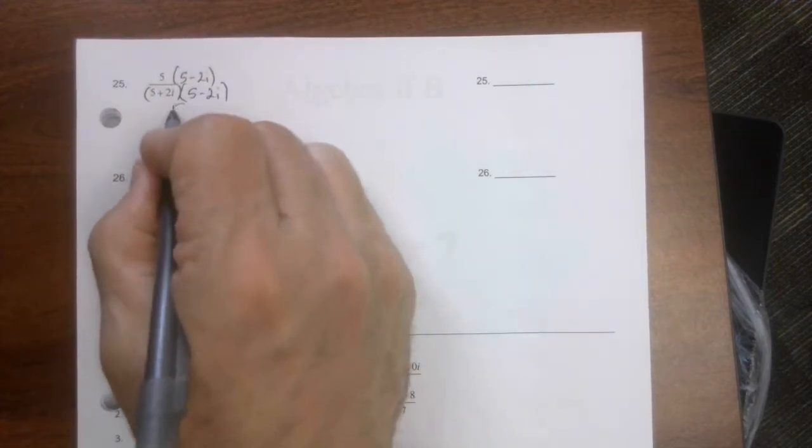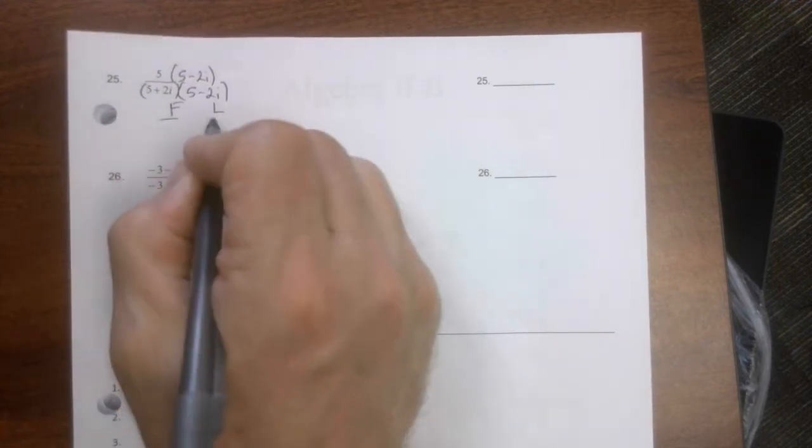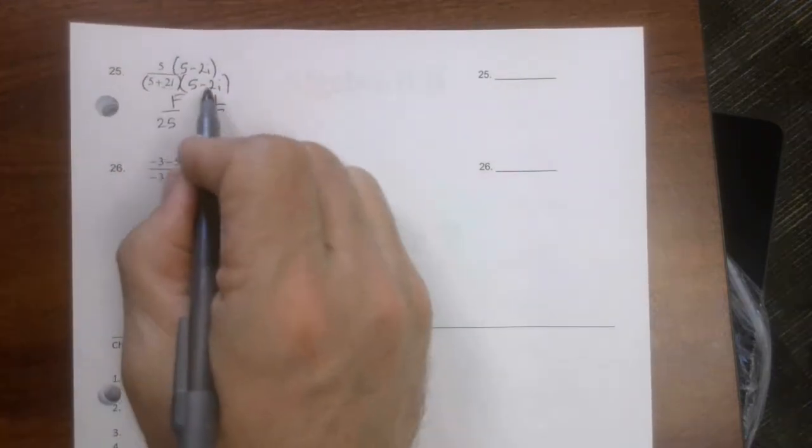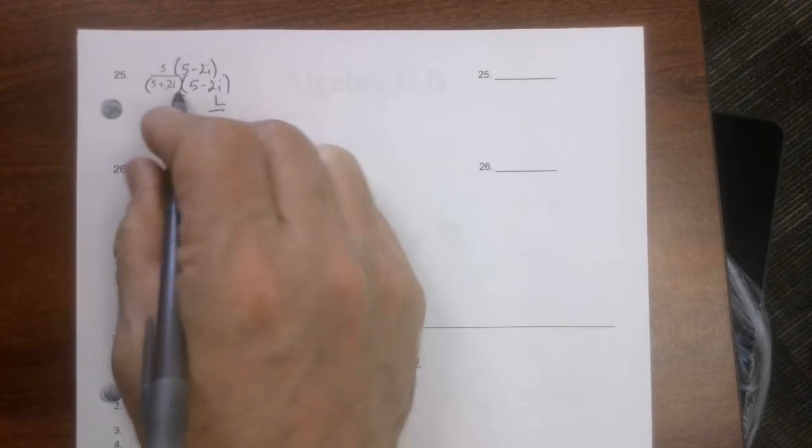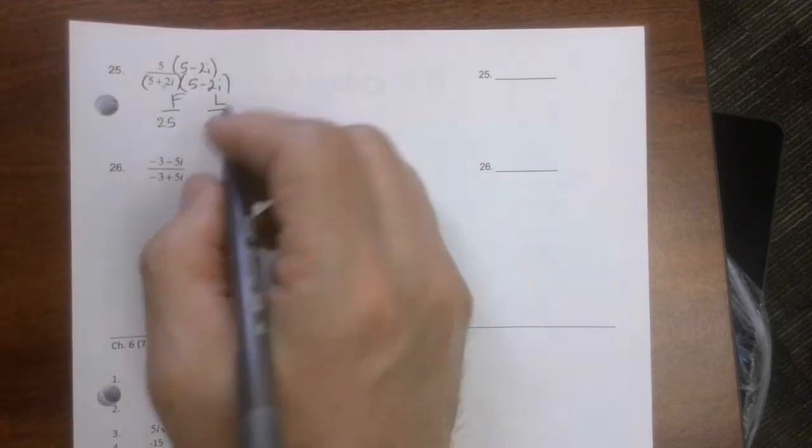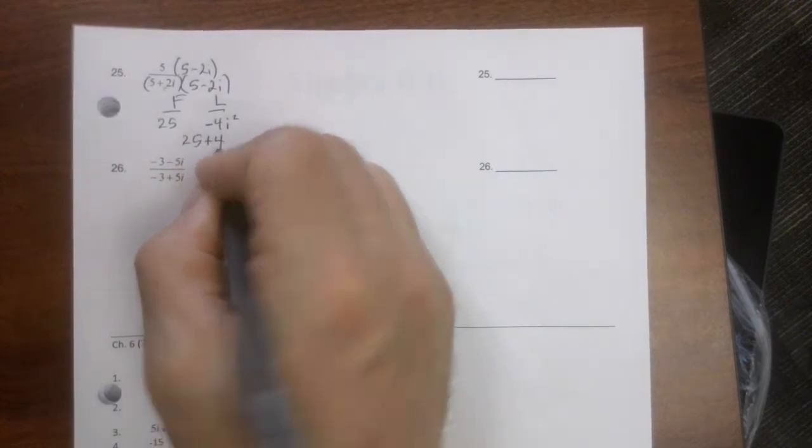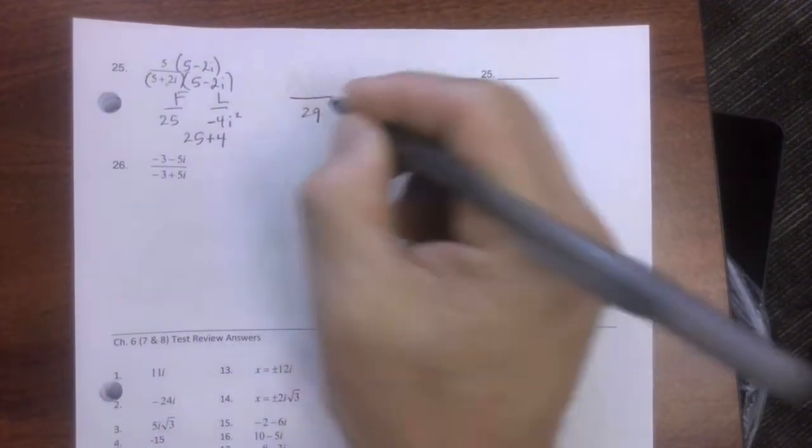Like I said, you can fool, a little shortcut, it's our conjugates. 5 times 5 is 25. 2 times negative 2 is negative 4. i times i is i squared. So this is really 25 plus 4. So I get a 29 in the denominator.